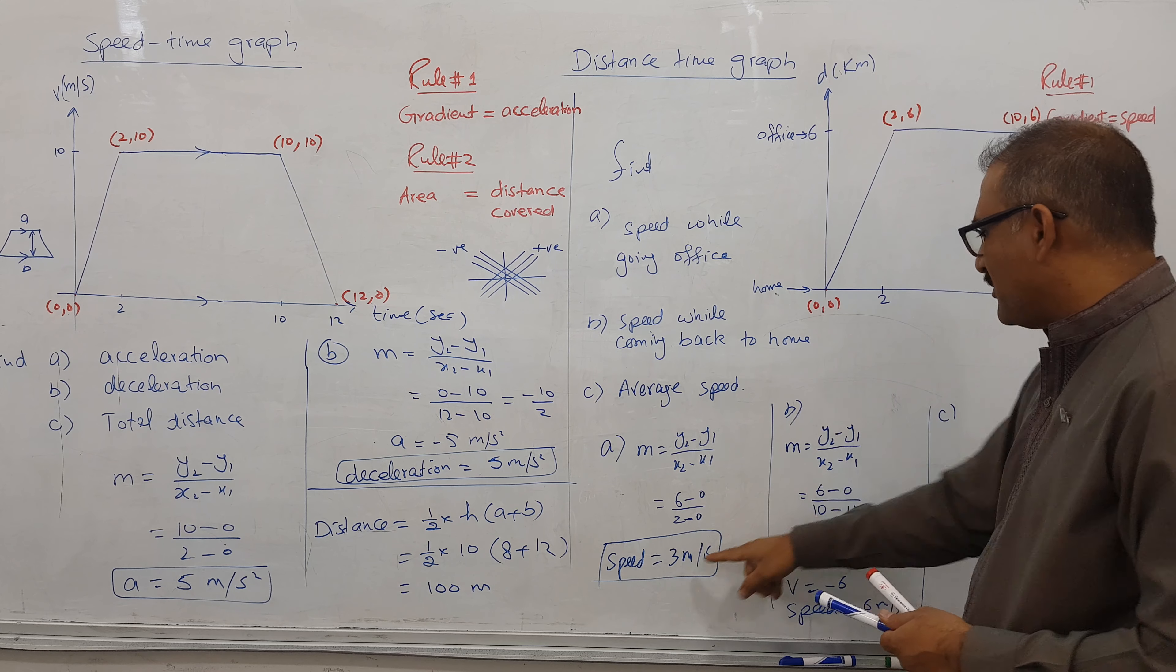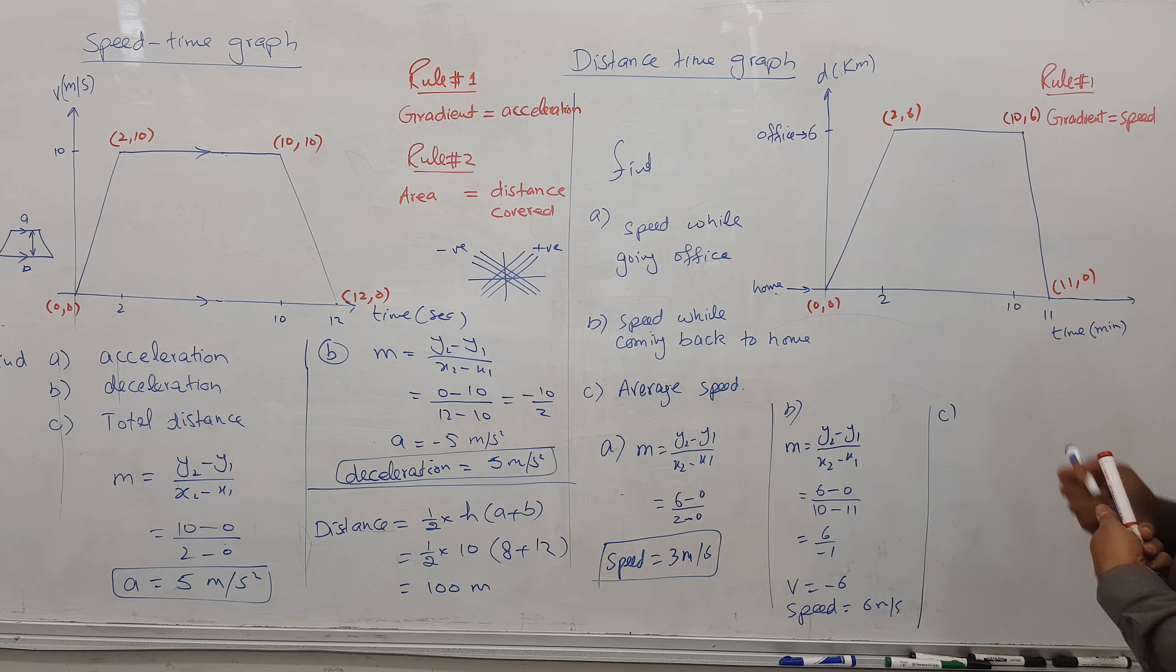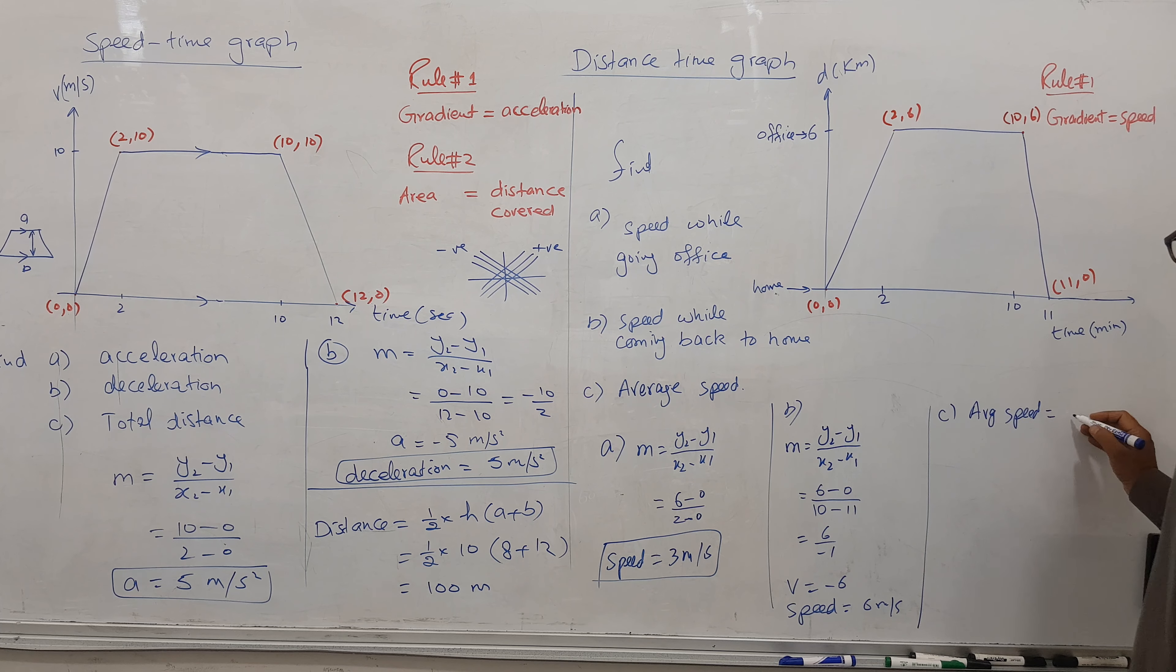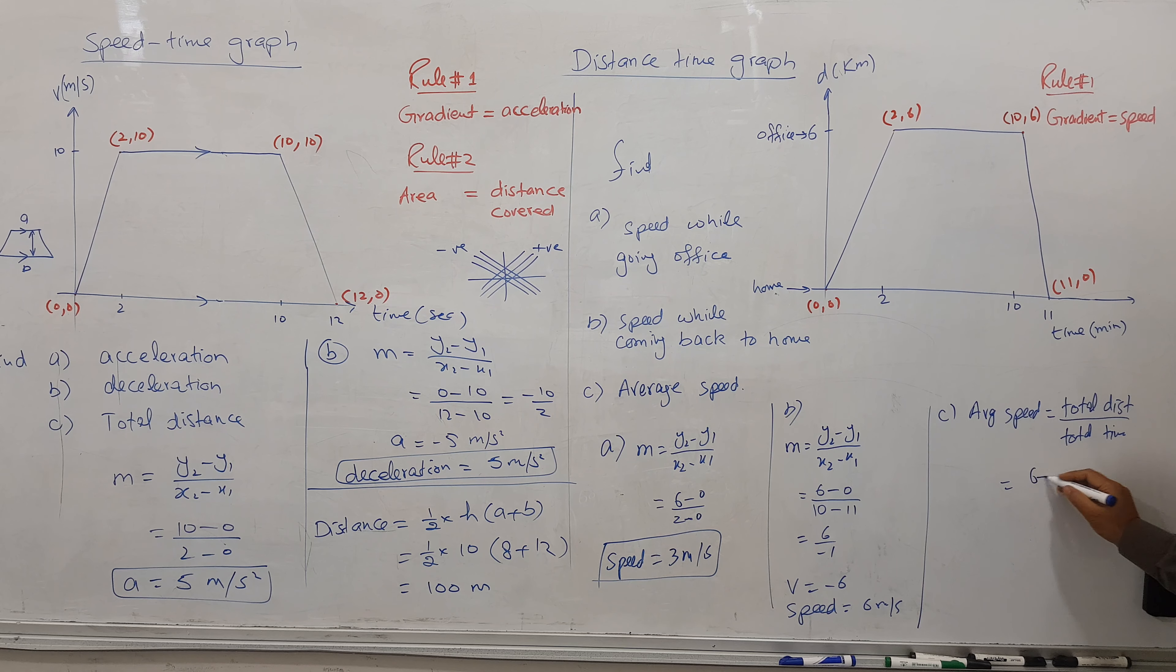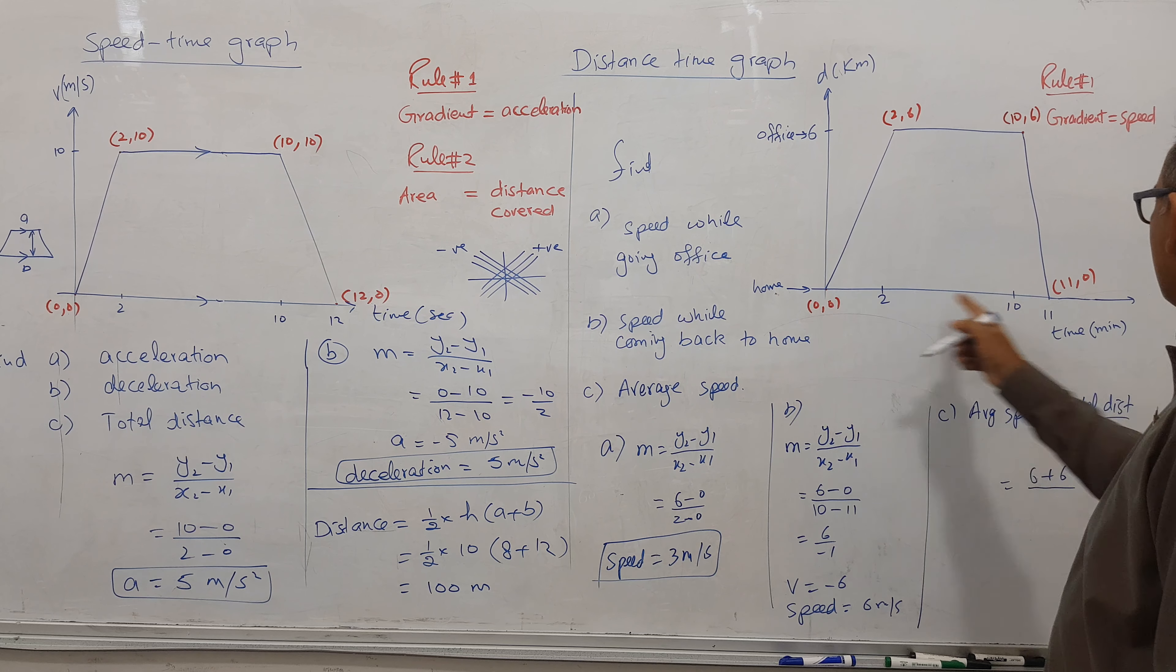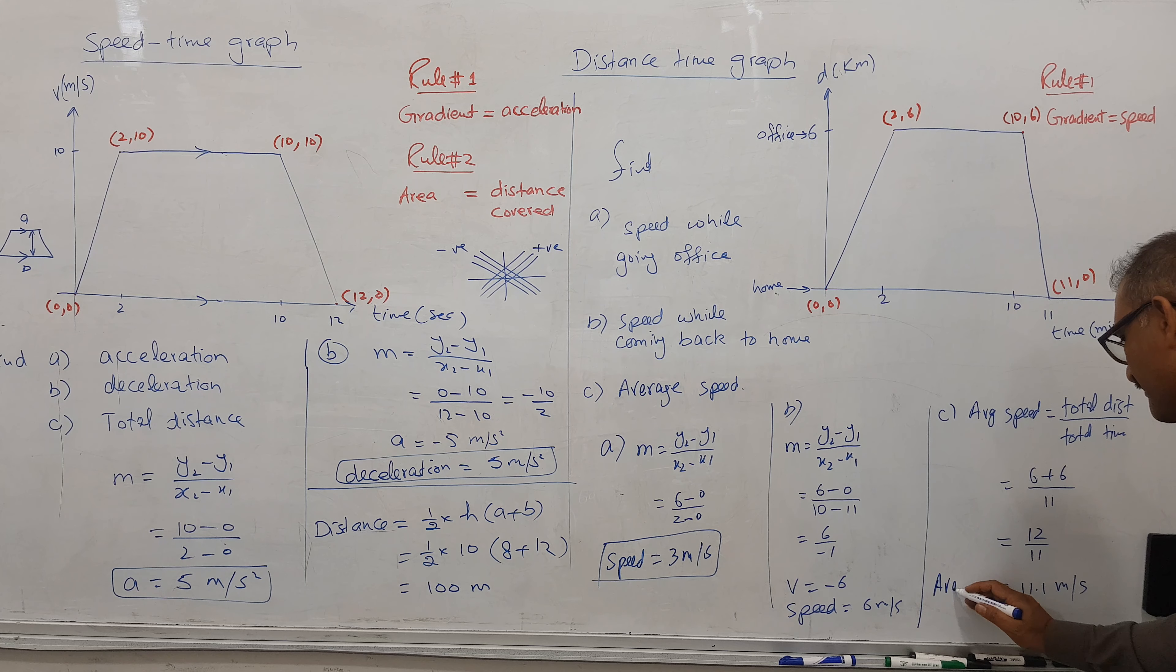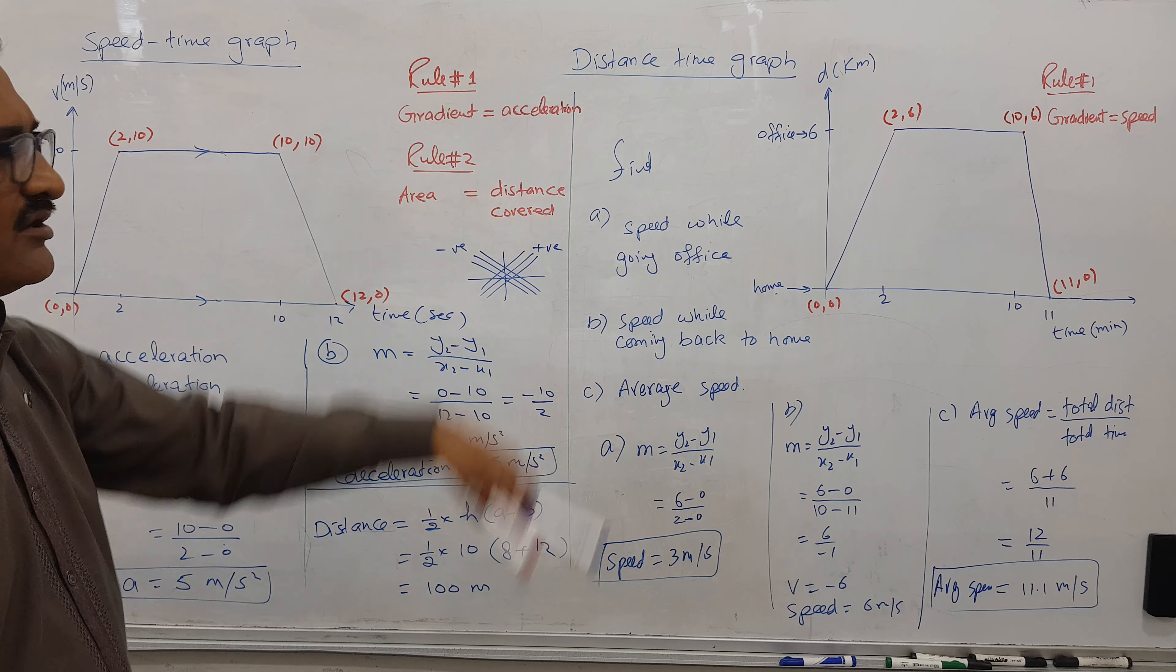Speed is positive when going away from observer, negative when coming back to observer. To find average speed, the formula is total distance divided by total time. Total distance is 6 kilometers going forward and 6 coming back, so 12. Total time is 11. So 12 divided by 11 equals approximately 1.09 meters per second average speed.